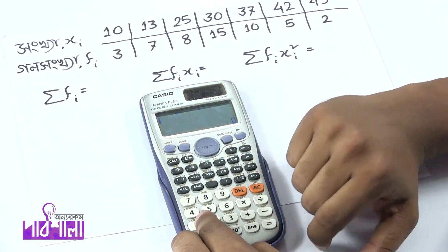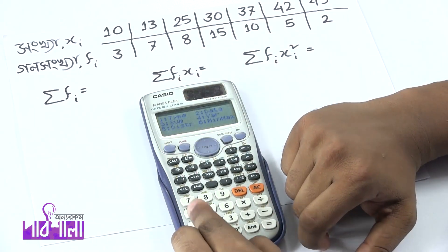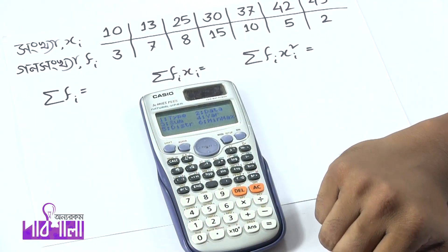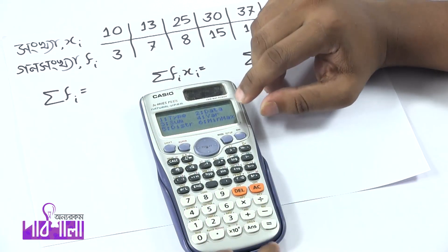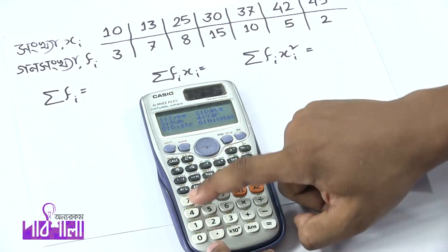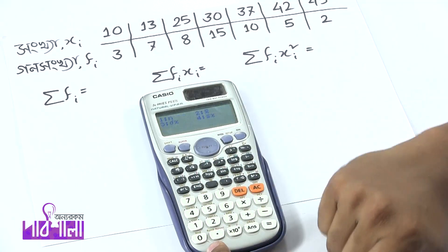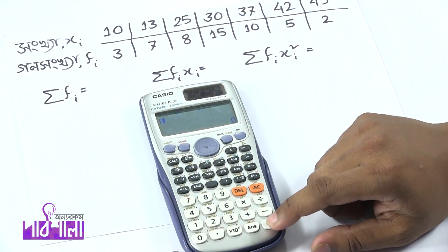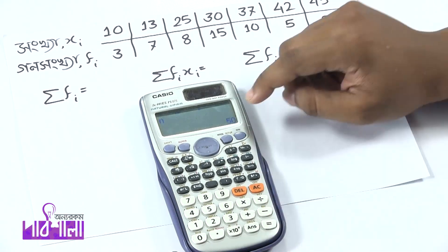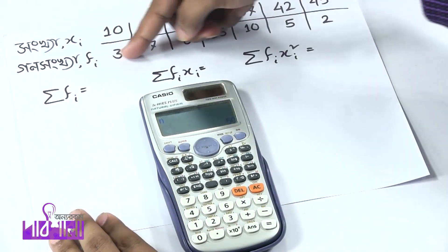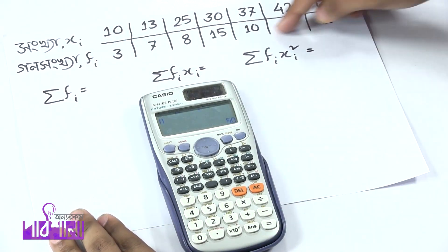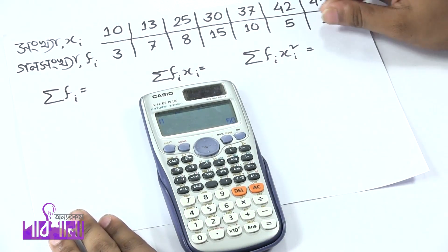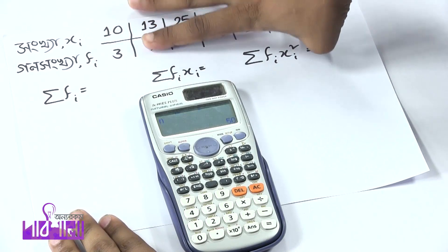So, shift 1, then variable 4, and then 1 press 1, n equal to 5. So, this is the soft frequency that we have; we can see that the total frequency is 5.